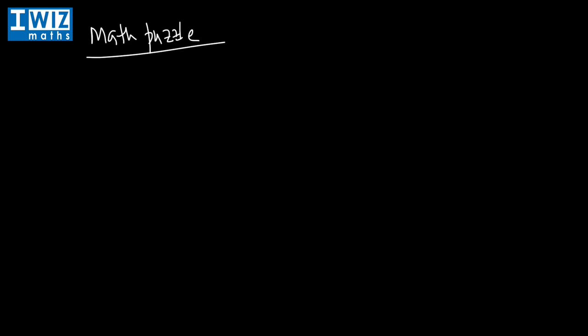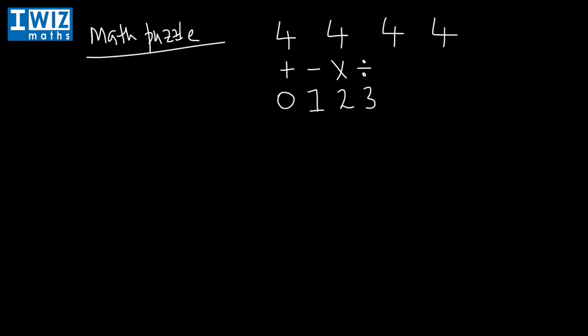I'm going to give you four fours — that's four, four, four, and four — and I'm going to give you a few math operators: plus, minus, multiplication, and division. Using all four fours and some or all of these math operators, you need to arrive at the number zero, arrive at one, two, three, and all the way up to nine.